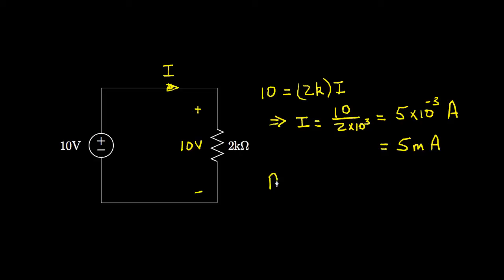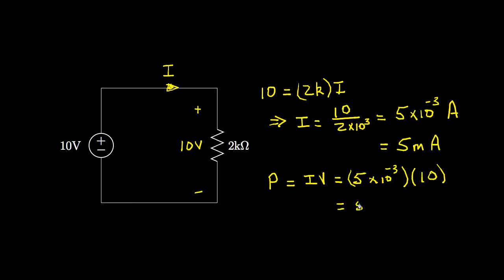Now to compute the power, we can multiply the current times the voltage, or use one of our derived relationships. Using current times voltage: P equals 5×10⁻³ amps times 10 volts, which equals 50×10⁻³ watts, or 50 milliwatts.